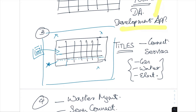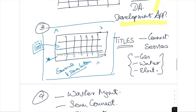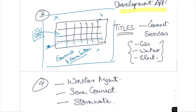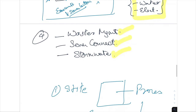The development approval will have all the details about where the easements are going to be, sewer locations, and things like that. The next step is to connect all the services: gas, water, electricity, as well as waste management, sewer connection, and stormwater connection.